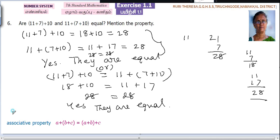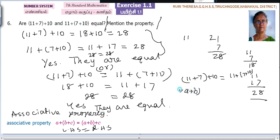Associative property. For each question you have to write the answer. This is first part, this is second part. How you are saying this is associative property? First what is given: 11 plus 7 plus 10 equal to 11 plus 7 plus 10. A plus B plus C equal to A plus B plus C. This is B plus C, this is A plus B. This is associative property.